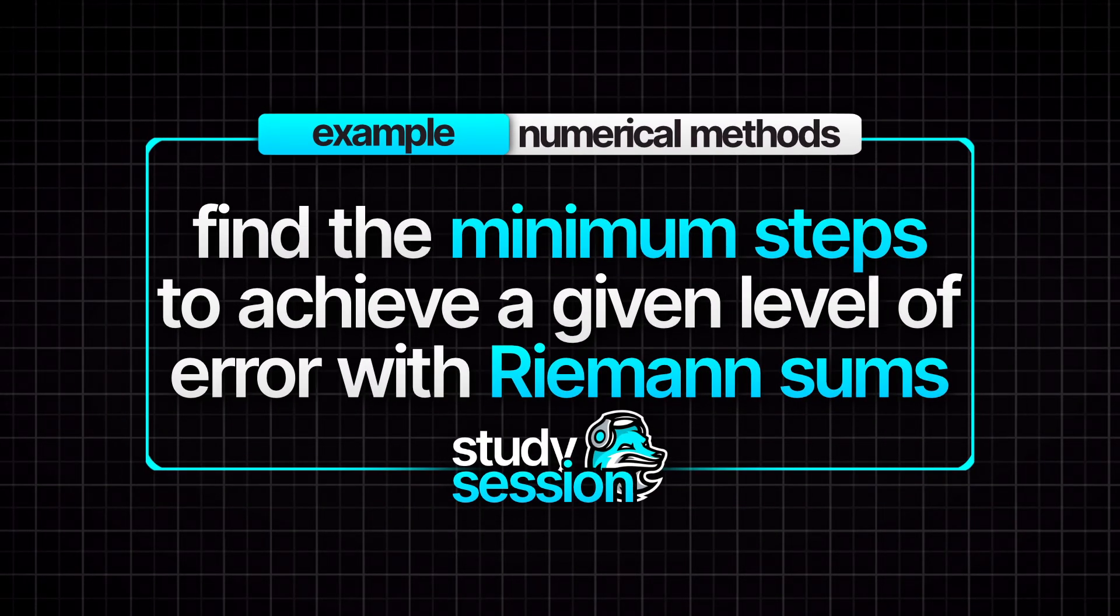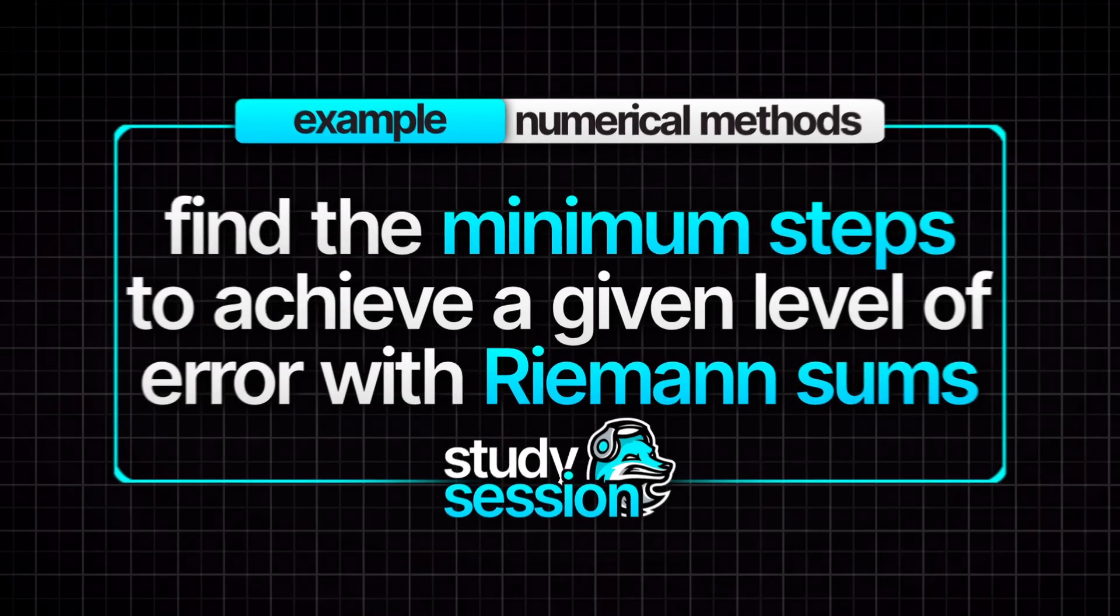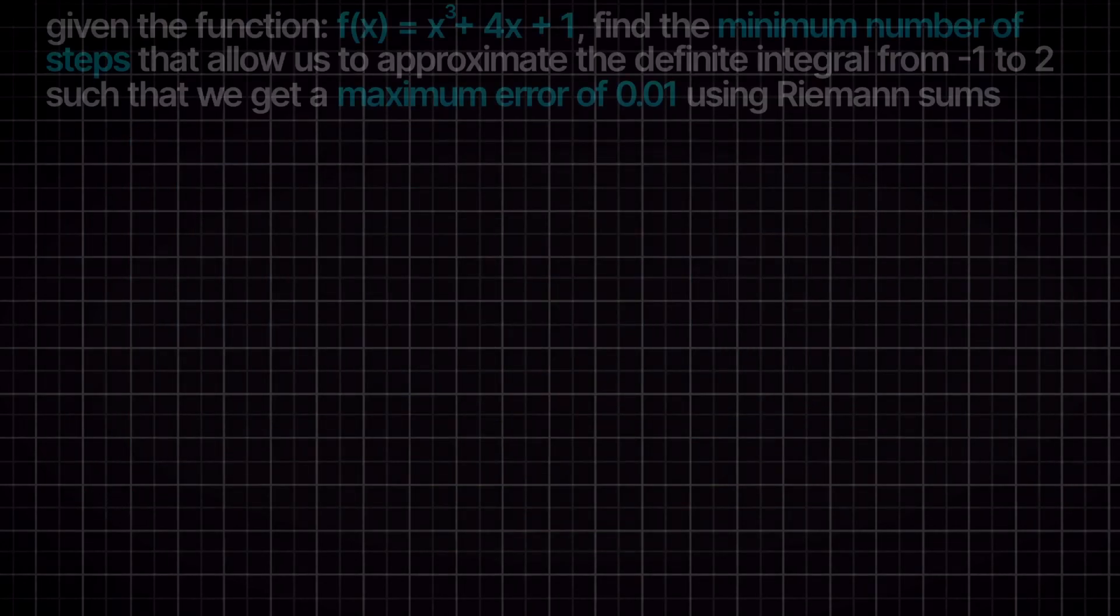Hey everyone, in this Riemann sum problem we are given the function f(x) = x³ + 4x + 1.